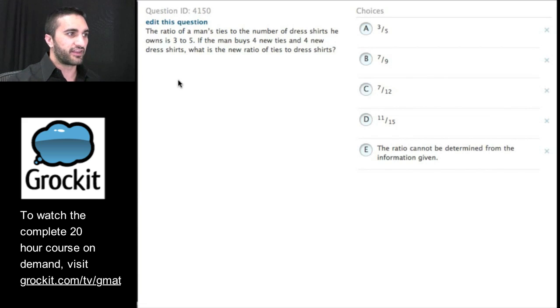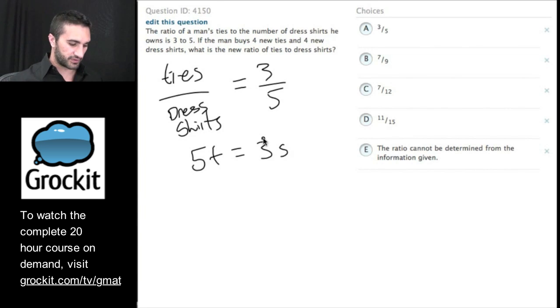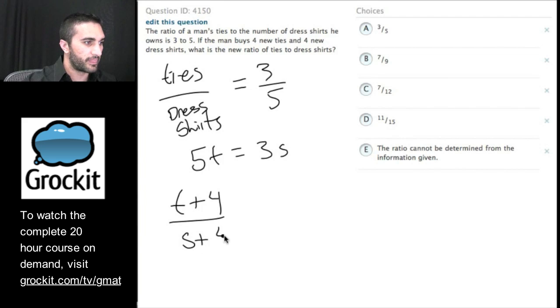We have the ratio of a man's ties to the number of dress shirts he owns is 3 to 5. Let's dissect that language. Just pulling the language out, so I know that 5 times the number of ties equals 3 times the number of shirts. Just cross multiply here. If the man buys 4 new ties and 4 new dress shirts, what is the new ratio of ties to dress shirts? So what can I do with this information? I want to say that if he buys 4 new ties and 4 new shirts, then what is the ratio? How can we figure that out?